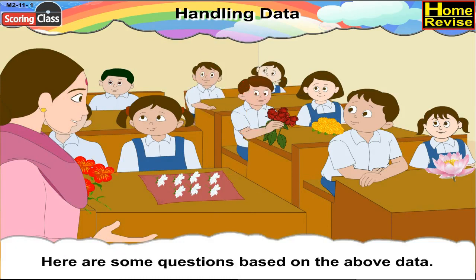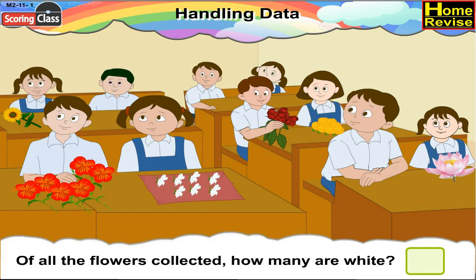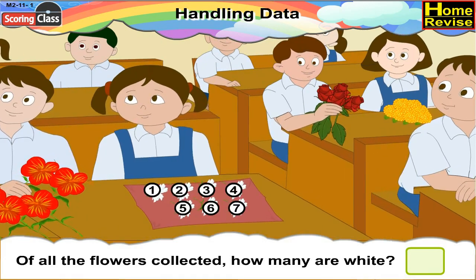Here are some questions based on the above data. Answer these questions. Of all the flowers collected, how many are white? Seven flowers are white. So write seven in the box.